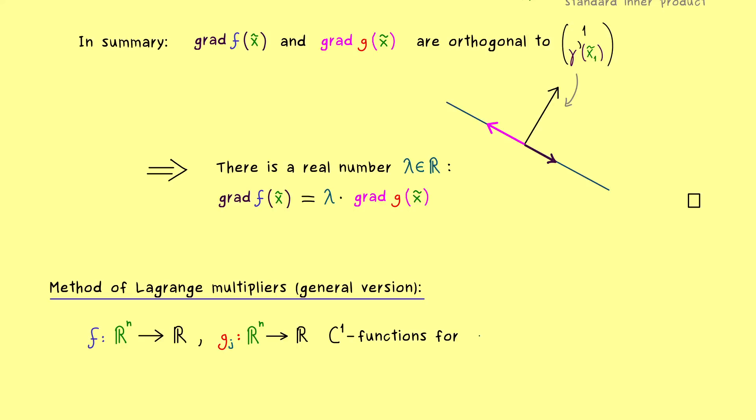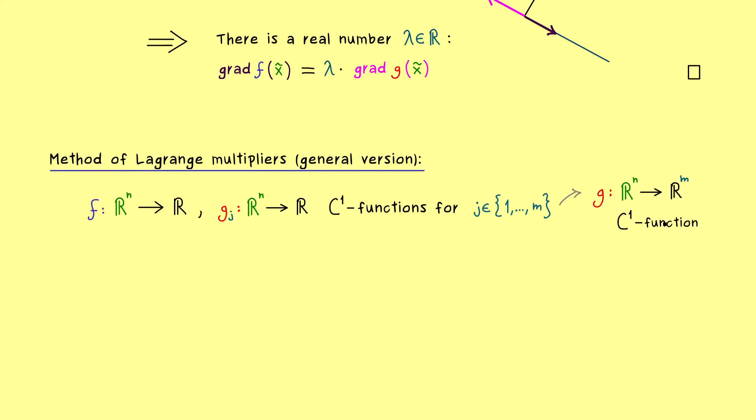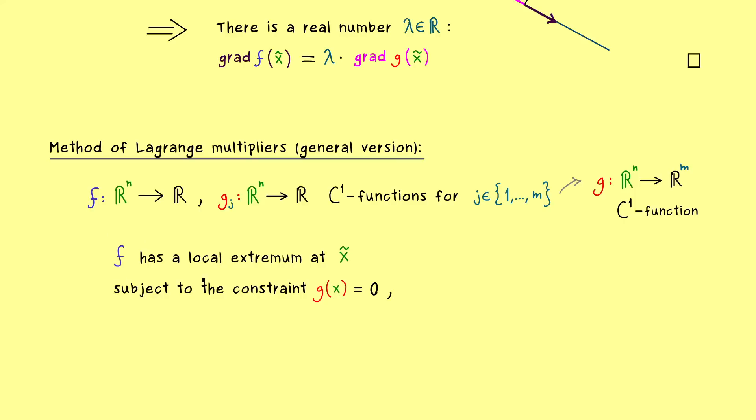So we could say we have m different functions gⱼ, so index j runs from 1 to m. In short, we could say we have one C¹ function g that maps into Rᵐ. Indeed, if we do that we can still say our constraint is given by g equals 0. The only difference is this 0 denotes the zero vector in Rᵐ. So again, when we say f has a local extremum subject to constraint g equals 0, it means we have m different constraints. So it's a generalization with two parts, but it looks the same as before. However, now the second assumption has to look a little different because g does not have a gradient anymore.